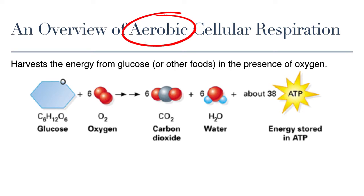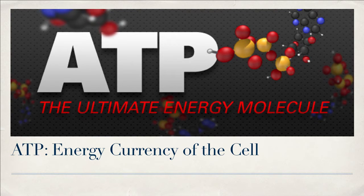This reaction is not the most efficient. There is a lot of energy found in glucose that is not harvested into molecules of ATP and is released as heat. So before we start looking at the details of cellular respiration, let's try to understand ATP real quick.